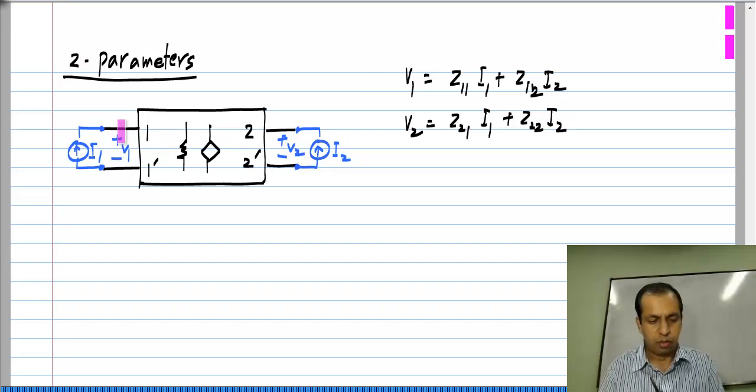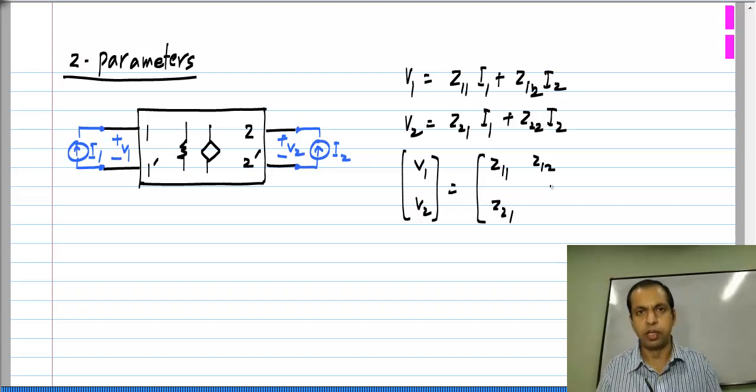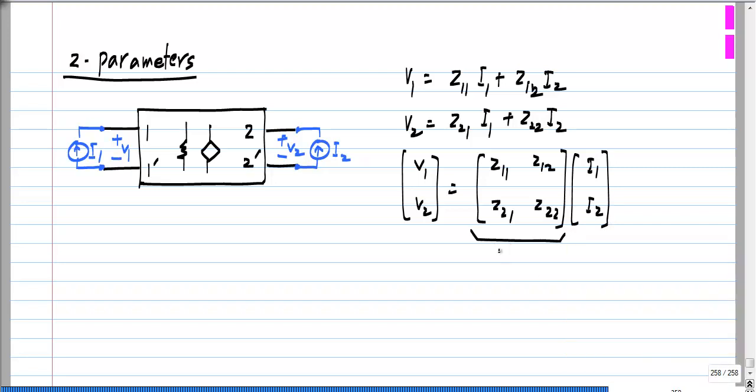As usual, mind the directions of voltages and currents, they follow the passive sign convention and this is usually also represented in a matrix form. So, exactly the same thing. The linear equations are placed in a matrix form that is all. And this matrix, this 2 by 2 matrix is known as the Z matrix or Z parameter matrix of the two port.